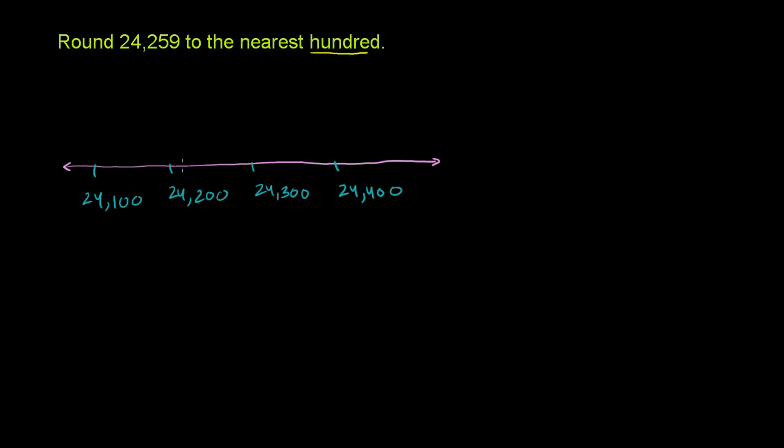So 59, if this distance right here is 100, 59 is right about there. So that is where our number is. That is 24,259. So when someone asks you to round to the nearest hundred, they're literally saying,